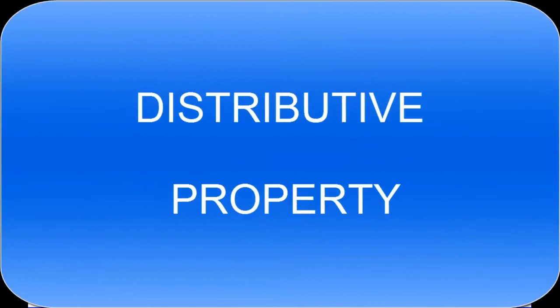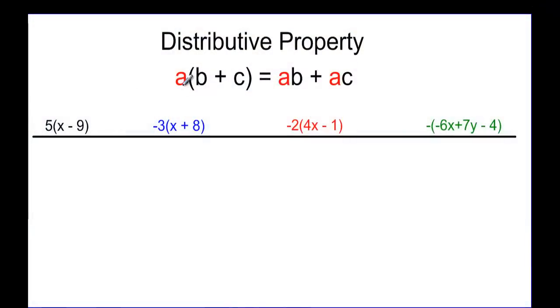This video will talk about the distributive property. The distributive property looks like this: A times a quantity like B plus C. You've got an addition or subtraction inside parentheses and a number outside being multiplied. When you distribute, you want to distribute that A to everything inside the parentheses — so you take A times B, plus A times C.